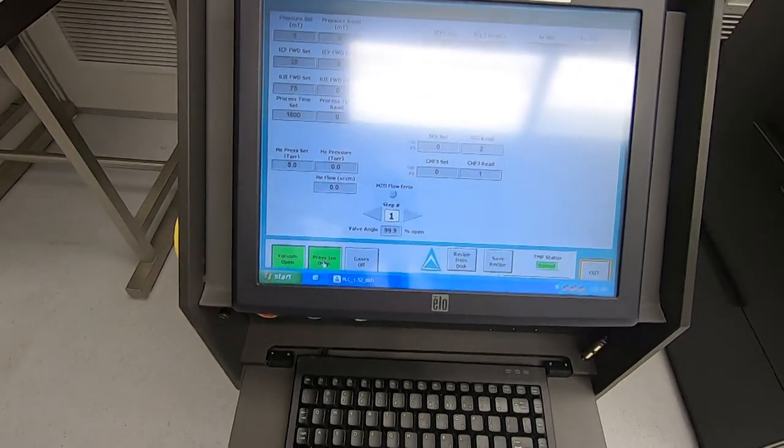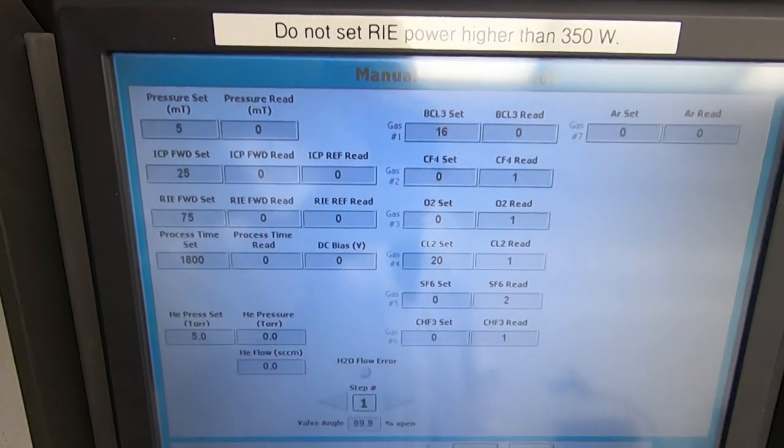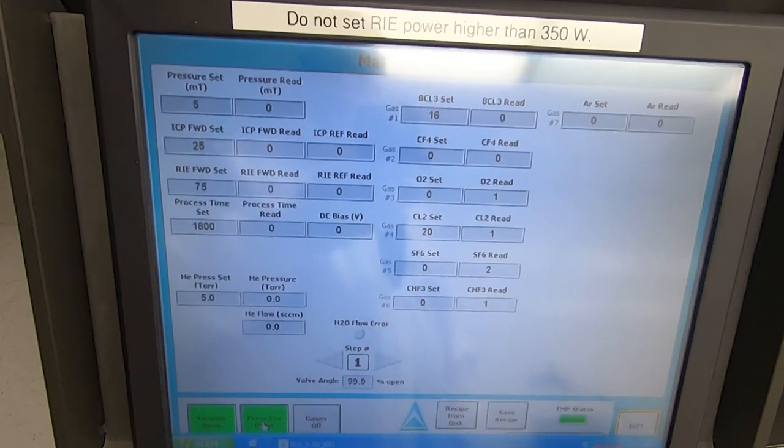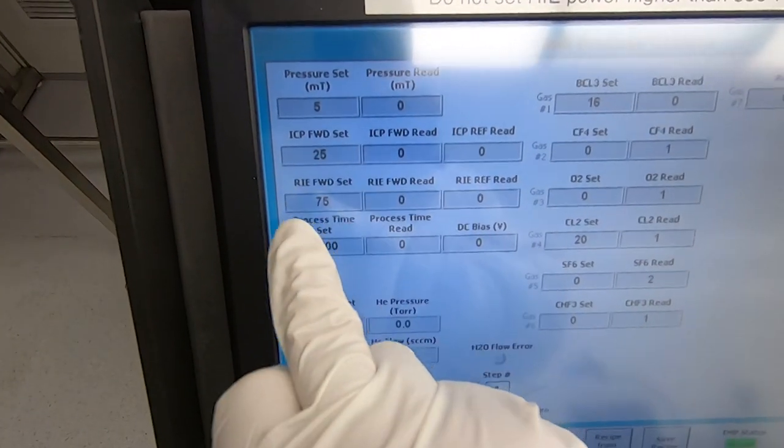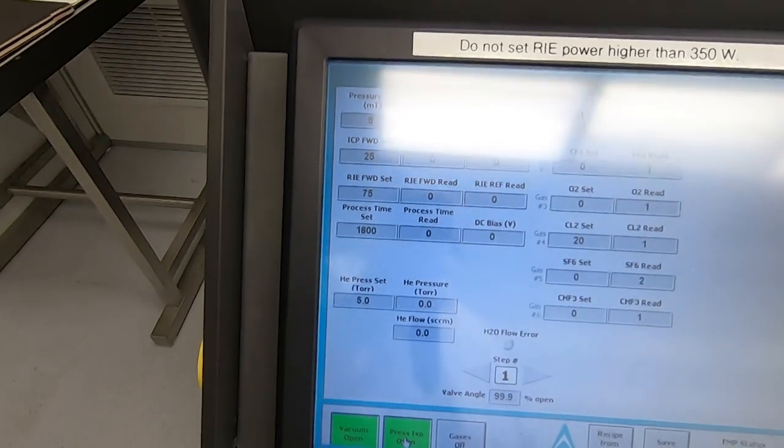In this case I'm getting set up to do gallium arsenide etching. So I've been playing with this recipe. I have the ICP power set to 25 watts and the RIE set to 75.